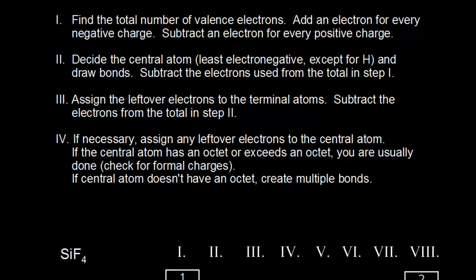Here are some of the guidelines for drawing dot structures. Let's say we wanted to draw the dot structure for silicon tetrafluoride. The first thing we need to do is find the total number of valence electrons, and we would account for these valence electrons in our dot structure.